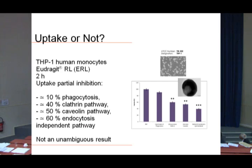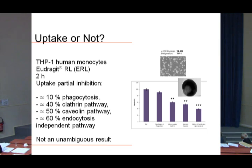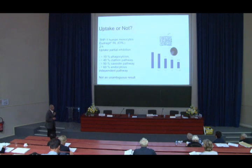In THP-1 human monocytes using Eudragit RL nanoparticles, we showed there is no uptake by phagocytosis when using specific inhibitors. There is a portion that uses the clathrin pathway, a portion that uses the caveolin pathway, and a portion that uses an endocytosis-independent pathway. So the result is not unambiguous.